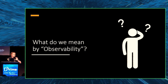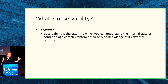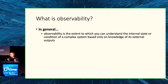Now onto the what. Observability is a term that can mean multiple things, so let me clarify. Generally, observability is the extent to which you can understand the internal state or condition of a complex system based on your knowledge of external outputs. It's about turning whatever's transmitted out of that system into valuable insights. The more observable a system, the more quickly and accurately we can navigate to a problem, solve it, and understand its root cause without additional testing or coding.